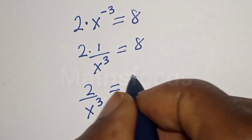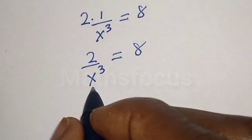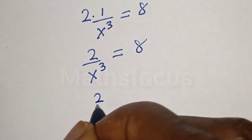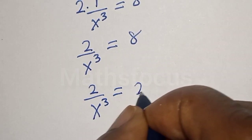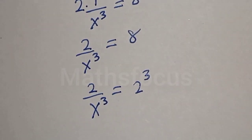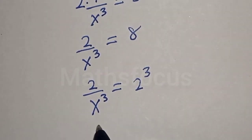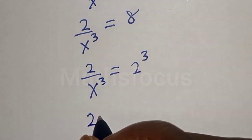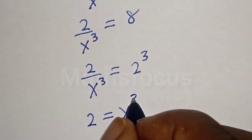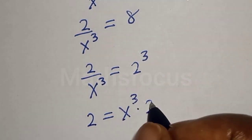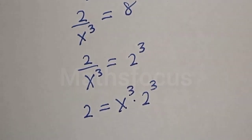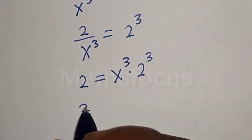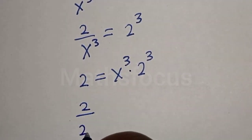And this is 2 over s raised to the power 3, equal to 8. Then this is 2 raised to power s raised to the power 3, equal to 2 to the power of 3. Now let's cross multiply. We have 2 is equal to s raised to the power 3 multiplied by 2 to the power of 3. Now let's divide both sides by 2 raised to the power 3.